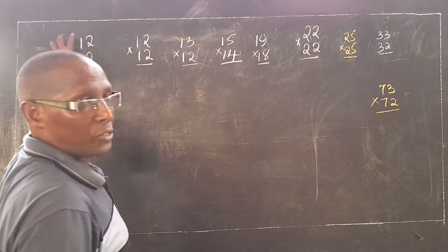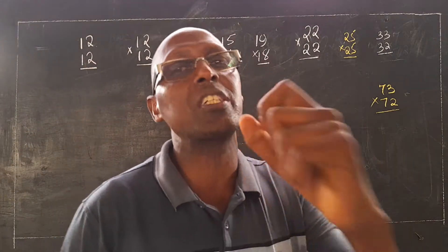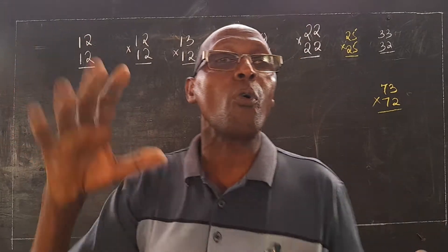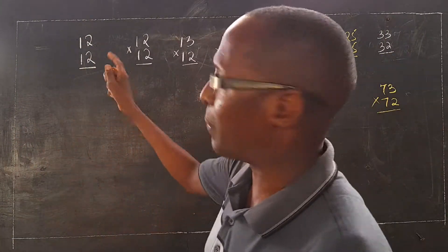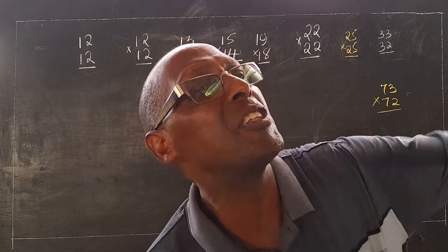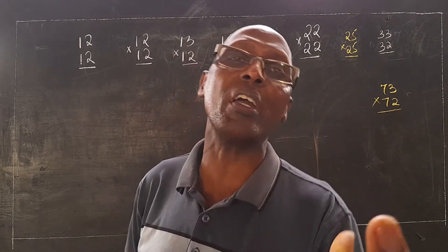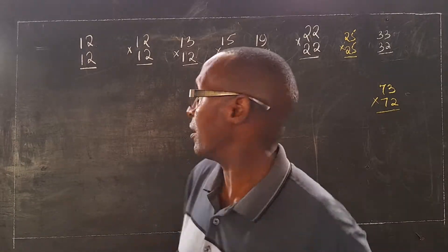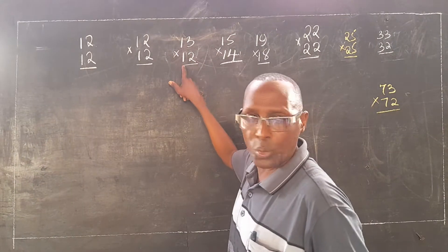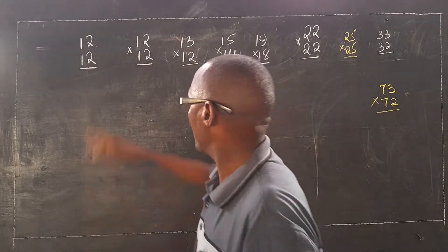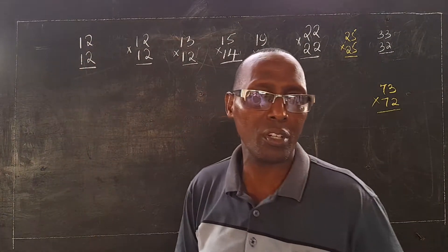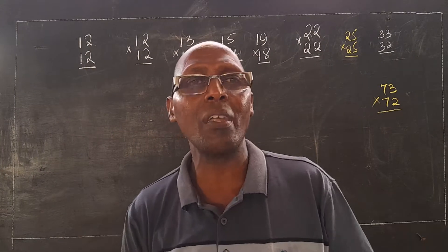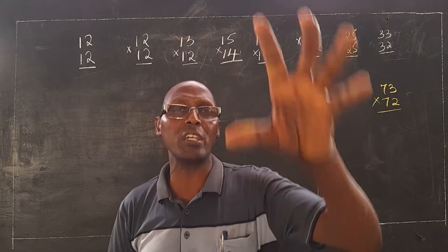For example, we have 12 times 12. I've started with a number which everybody knows the answer. We have the normal way, the analog way of multiplication — I'll leave it for you. Let me show you the digital way of multiplying two digits between two consecutive tens. For example, 13 times 12, they are all between 10 and 20, the same with 12 times 12. I'm going to show you, first of all, the general way of multiplication and also the special way of multiplication.